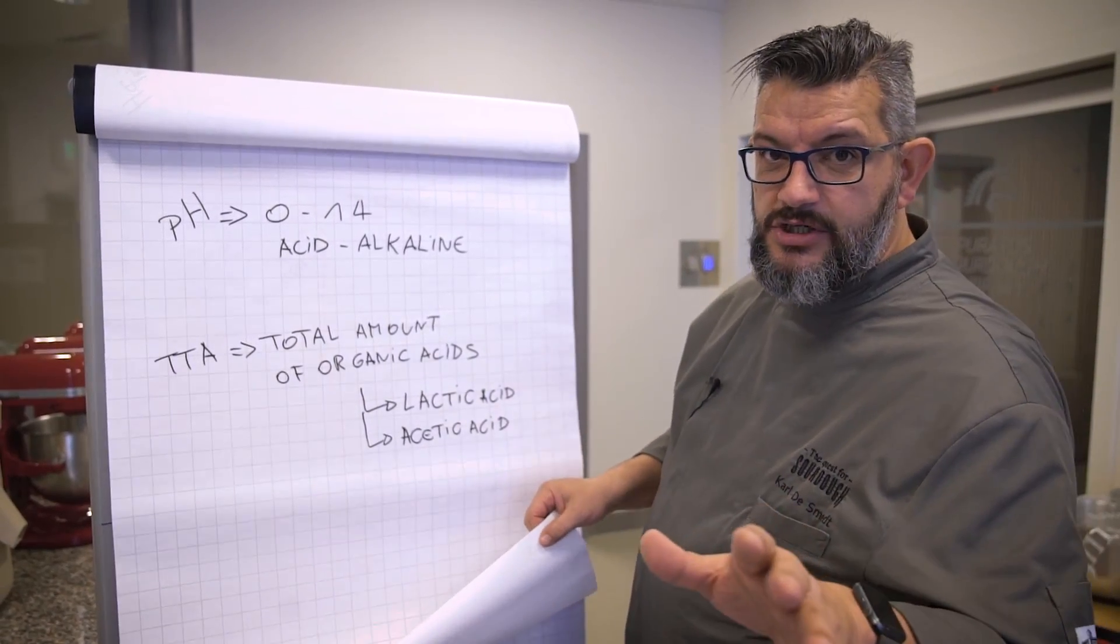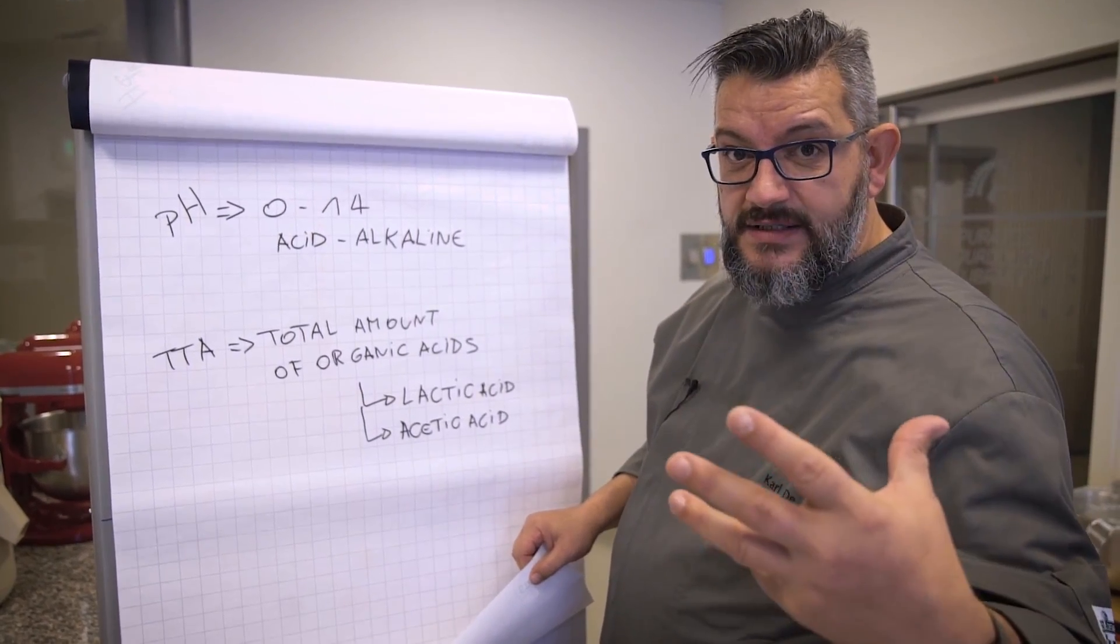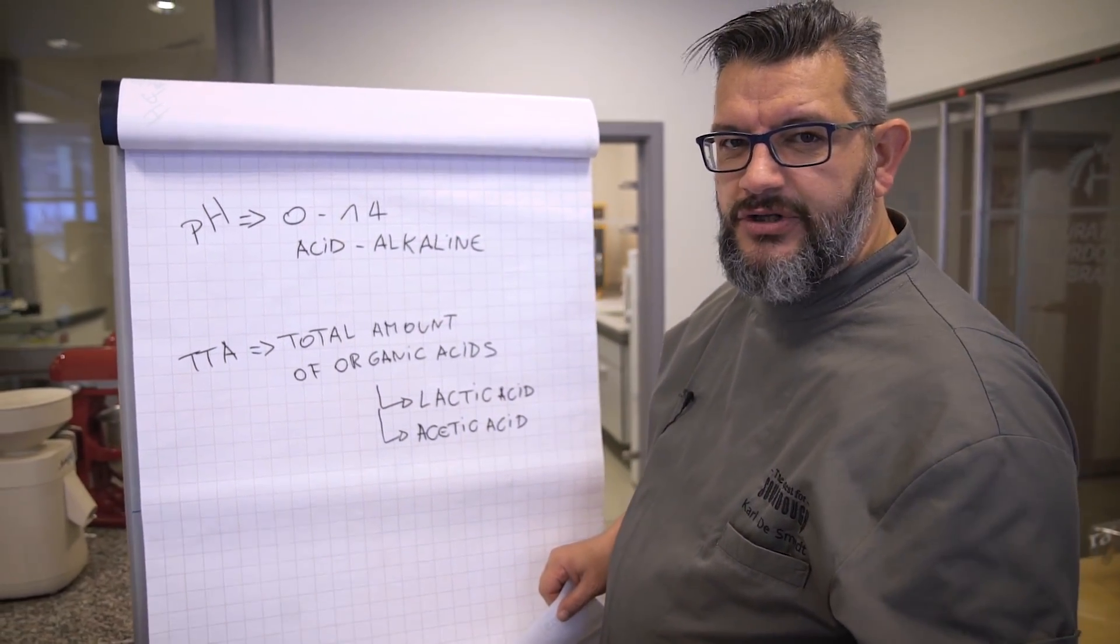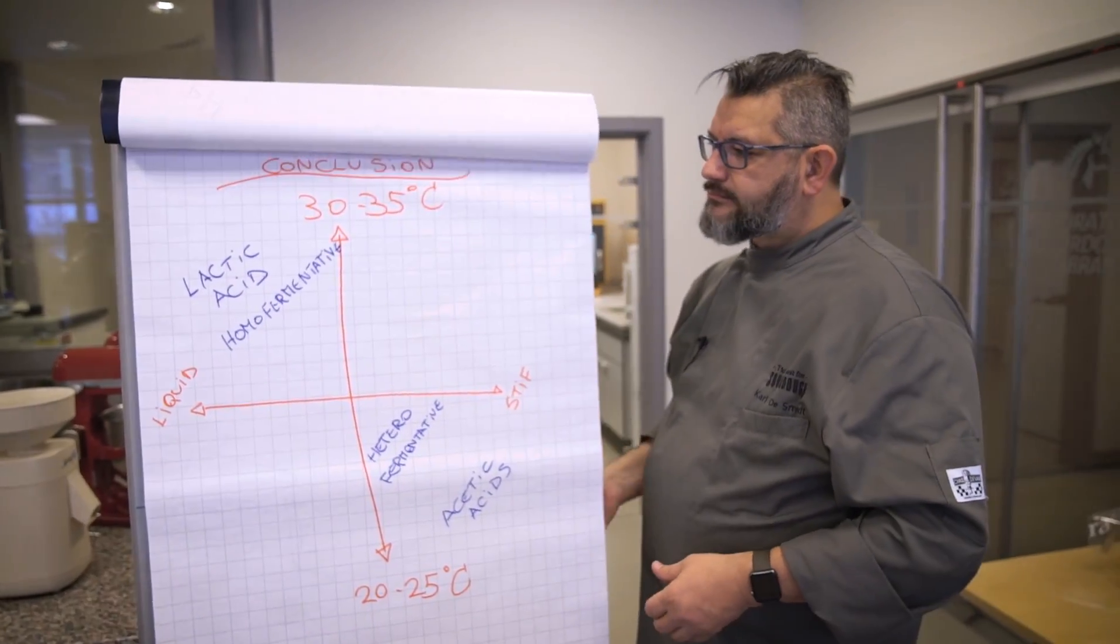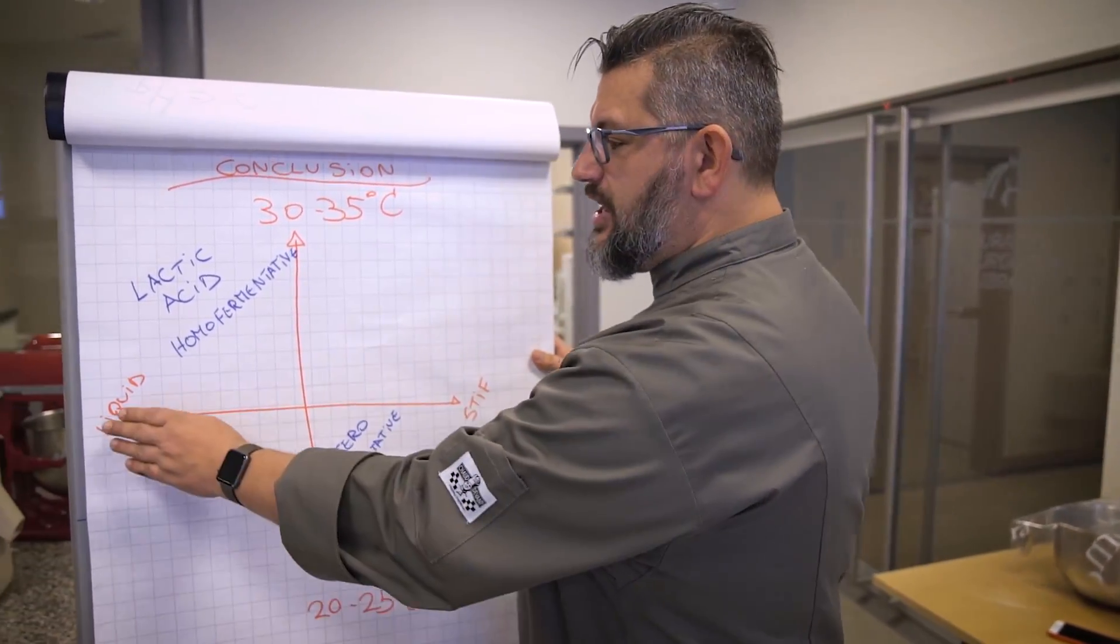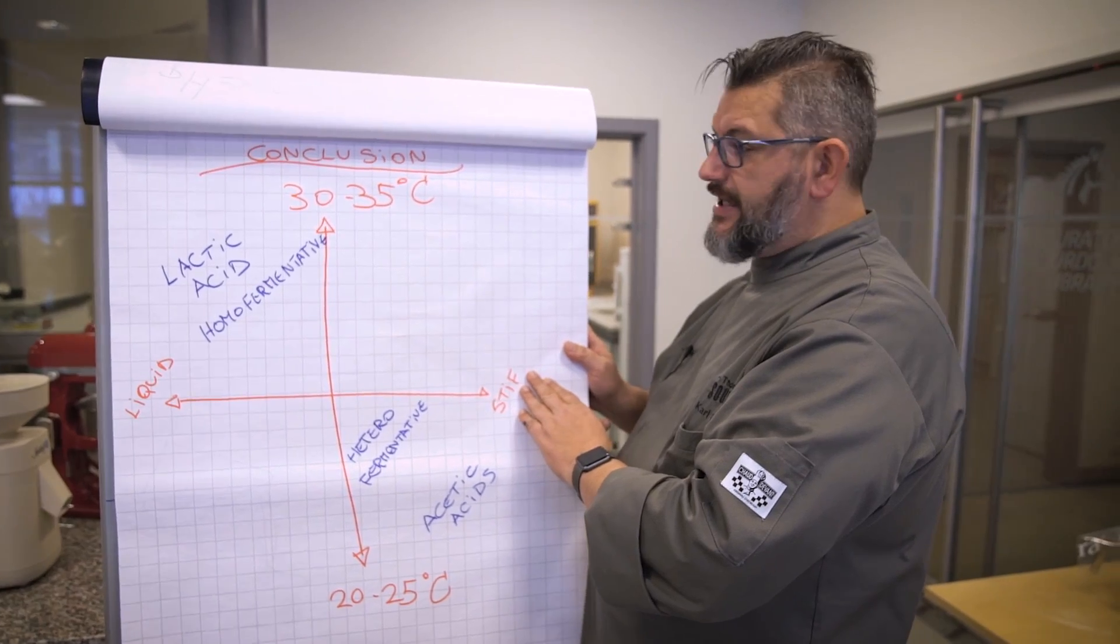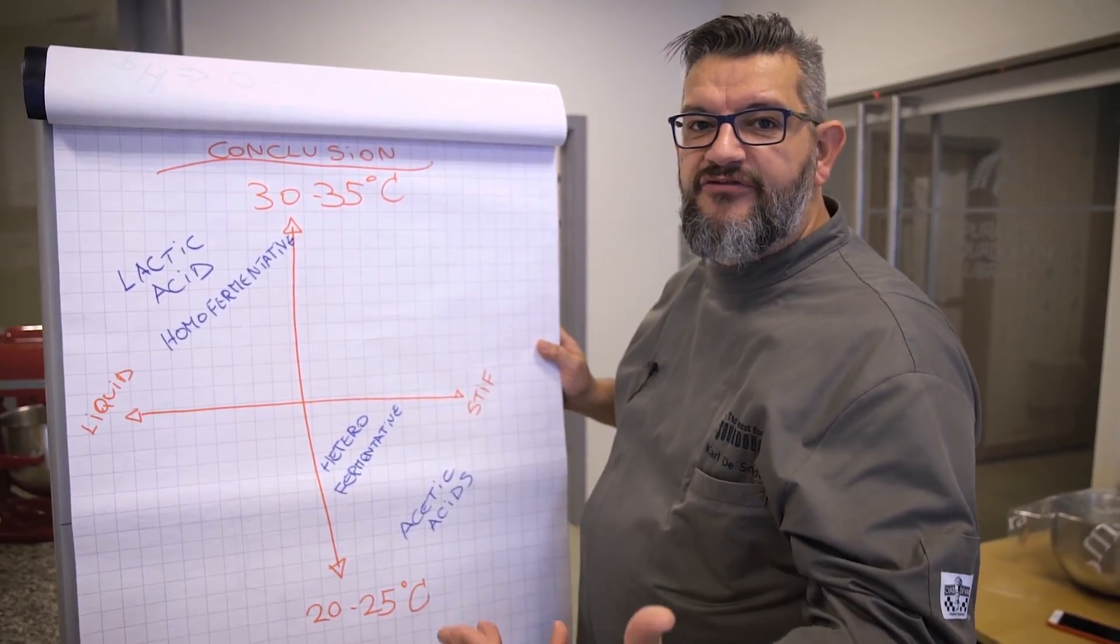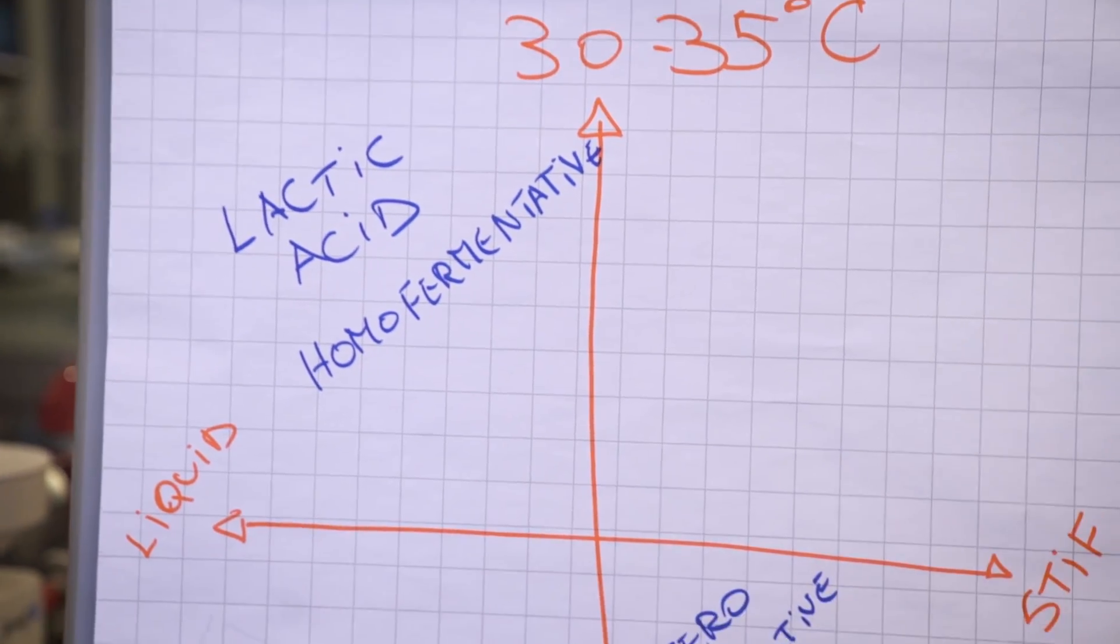Now, the last thing I will show you, and if you memorize that, you pretty much understand everything that is going on in your sourdough, is that if you have a liquid or a stiff starter and you keep it at 20 or 35 degrees, you will influence the flavor of your sourdough.